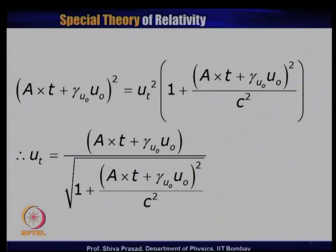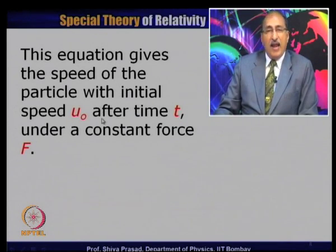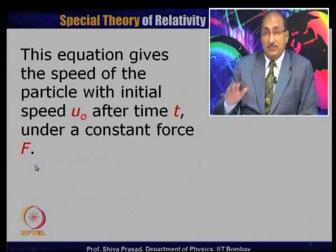Now that we have the speed as a function of time, I would also like to find out the distance travelled by the particle in the same time t under the same conditions. This is the relativistic equivalent of the kinematic equation s = ut + ½At², which tells you the distance travelled in a given time t knowing the initial velocity u and acceleration. The equivalent can be found by integrating this equation, and the motion is assumed to be along the x direction for simplicity.